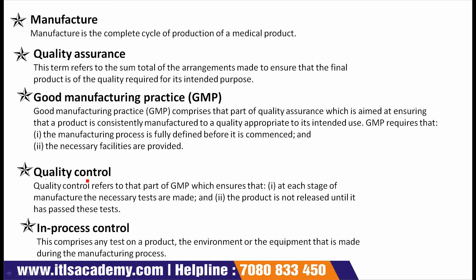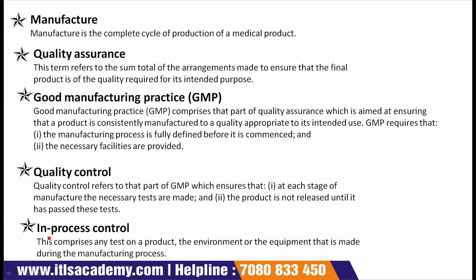The next term is quality control. Quality control refers to that part of GMP which ensures that at each stage of manufacture the necessary tests are made, and that the product is not released until it has passed these tests. The next term is in-process control, which comprises any test on a product, the environment, or the equipment that is made during the manufacturing process. These are all the essential definitions for this chapter.